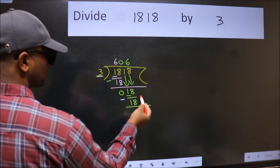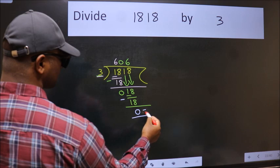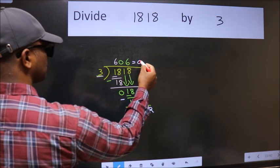No more numbers to bring it down. So we stop here. This is our remainder and this is our quotient.